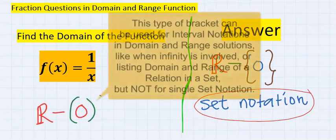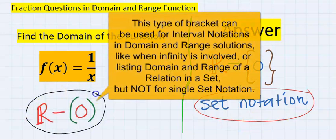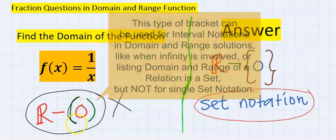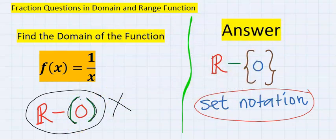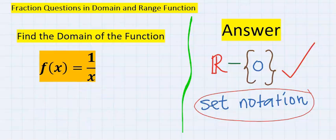Avoid representing this answer like this. It is wrong. Why? This bracket is not allowed in the representation of set notation for domain and range. This is our final result.